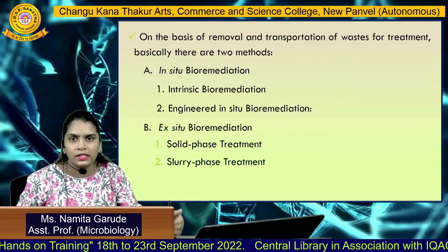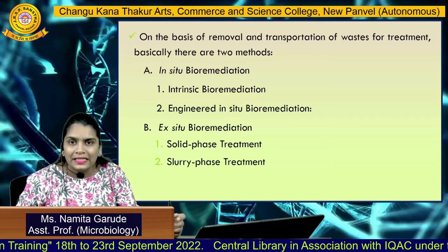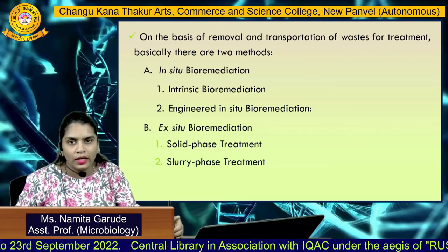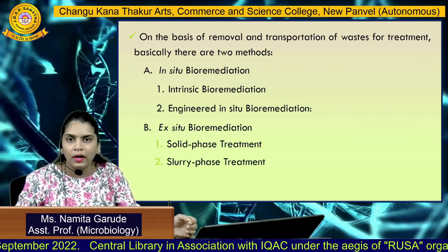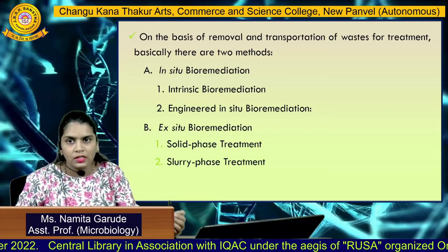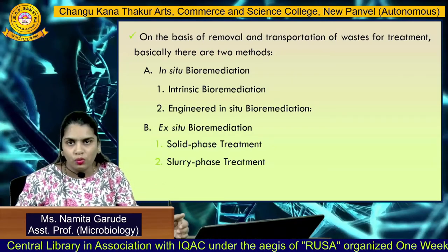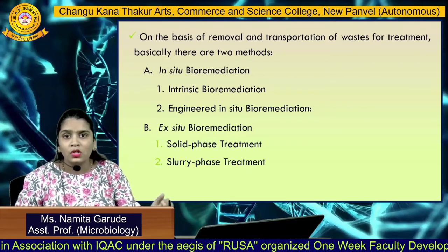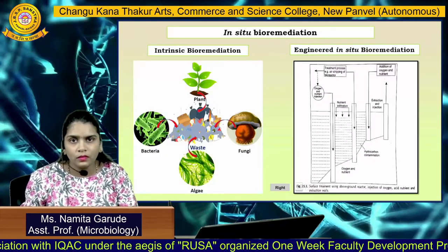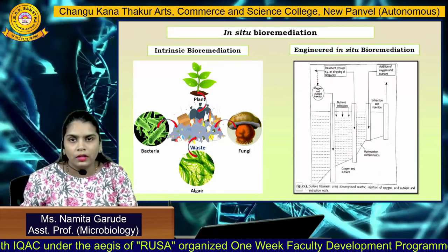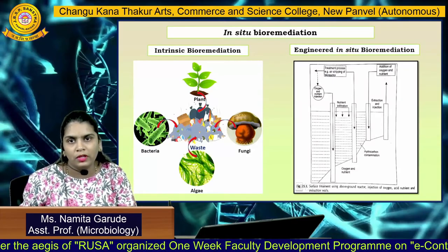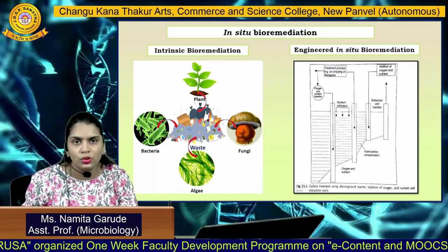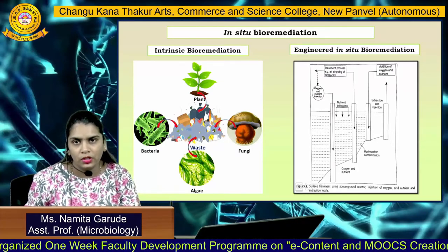Along with its advantages, in-situ bioremediation also has disadvantages. A minimal number of microorganisms can be affected by seasonal variations, and the process will be slower. These are the key disadvantages of in-situ bioremediation. Based on the type of contaminant, there are two types of in-situ bioremediation: intrinsic bioremediation and engineered in-situ bioremediation.